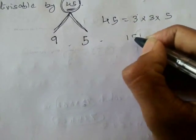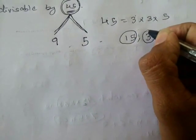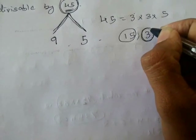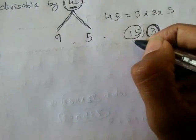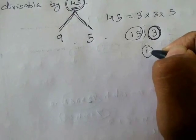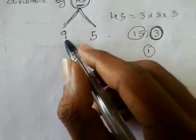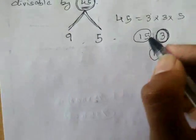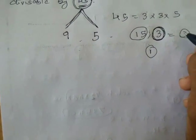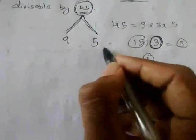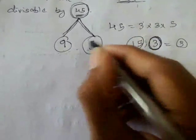We could also use 15 and 3, but 15 and 3 are not co-prime — their HCF is 3, not 1. Co-prime factors are factors whose HCF should be 1. The HCF of 9 and 5 is 1, so we use these factors and check if the number is divisible by both 9 and 5.